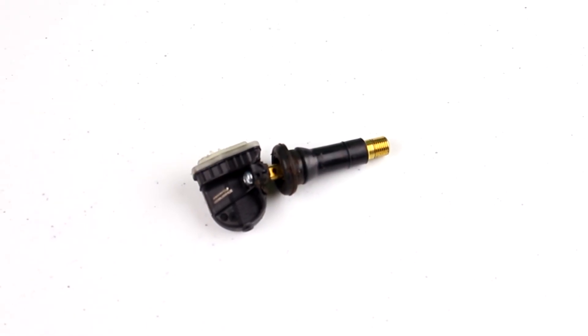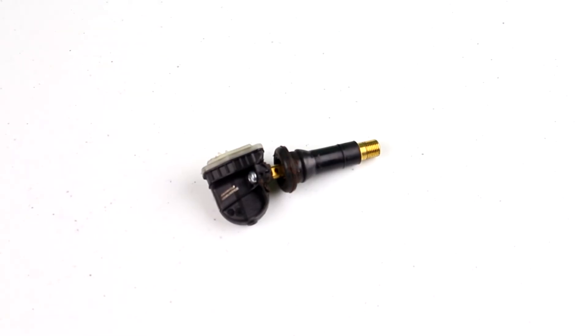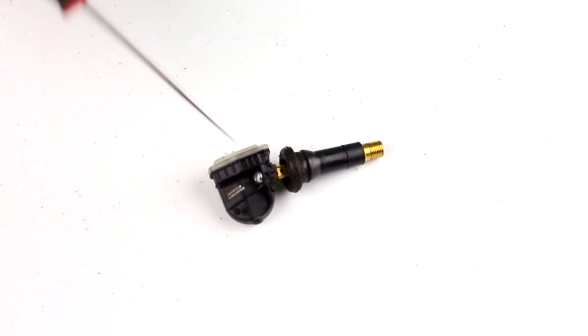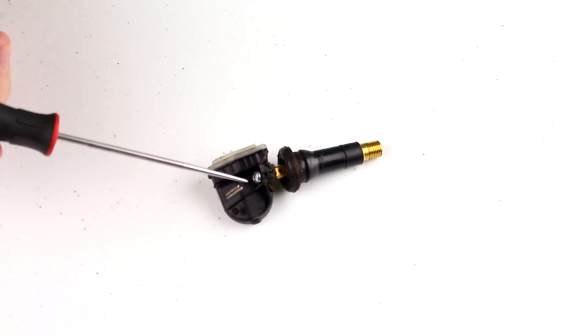This is a tire pressure monitoring sensor or TPMS. This small bolt right here attaches the valve stem to the sensor. It doesn't actually read anything from the valve stem. This is just so it has a place to attach to in the wheel.